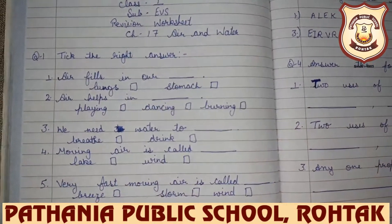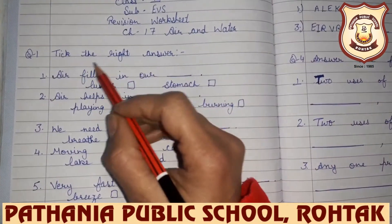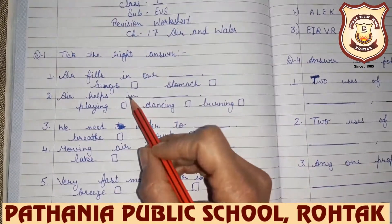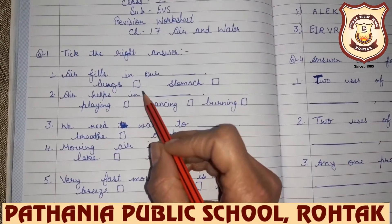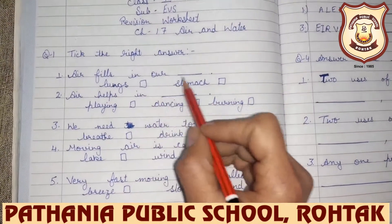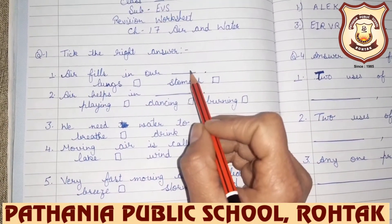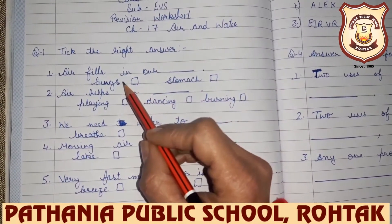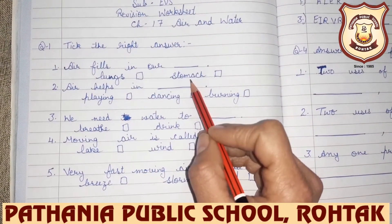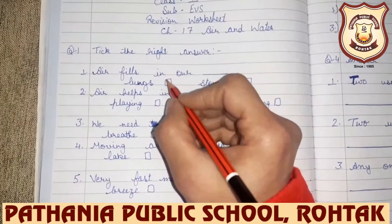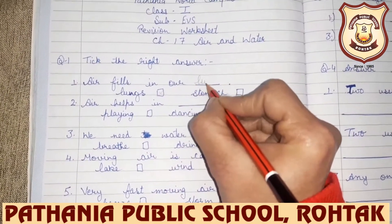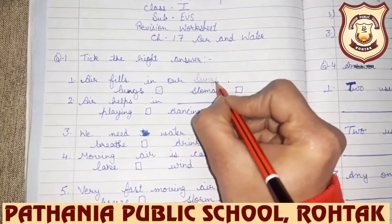Our first question is: tick the right answer. You have to tick on one option given here. Air fills in our blank — when we breathe, where does air get filled? Lungs or stomach? Air fills in our lungs. Write down L-U-N-G-S, lungs.